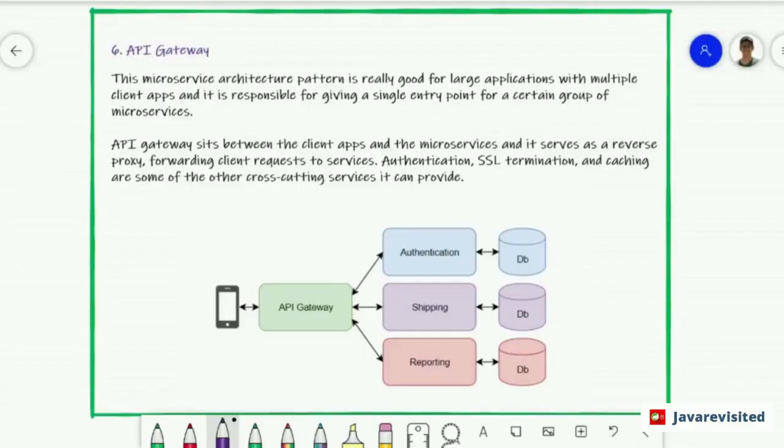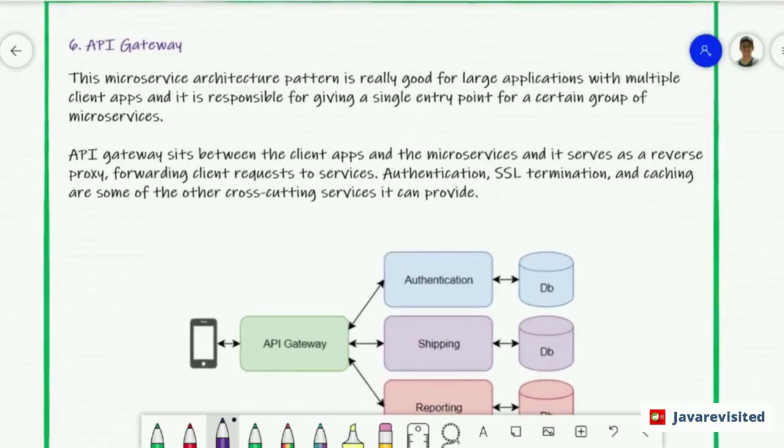The sixth pattern is API Gateway pattern. This microservices architecture pattern is really good for large applications with multiple client apps and it's responsible for giving a single entry point for a certain group of microservices. The API Gateway sits between the client apps and the microservices and it serves as a reverse proxy forwarding client requests to services. Authentication, SSL termination, and caching are some of the other cross-cutting services it can provide.